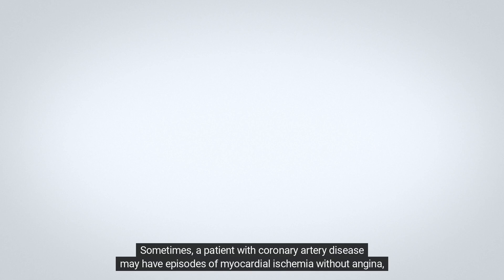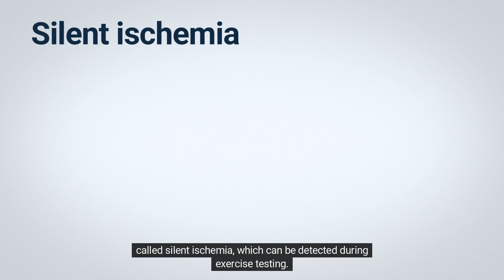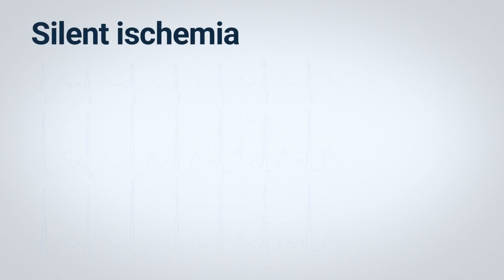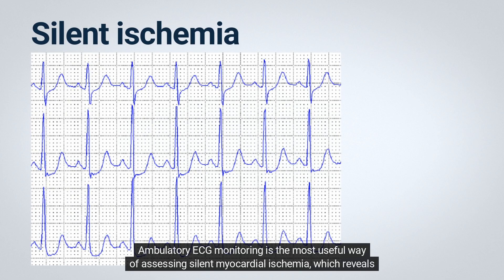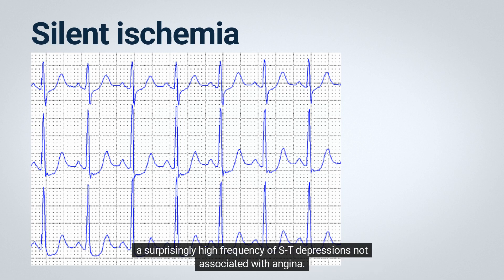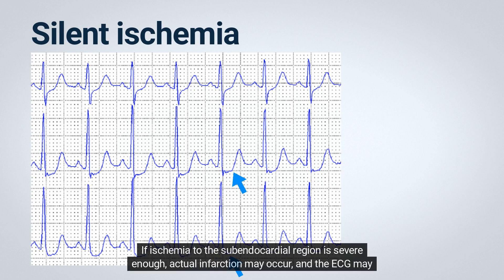Sometimes a patient with coronary artery disease may have episodes of myocardial ischemia without angina, called silent ischemia, which can be detected during exercise testing. Ambulatory ECG monitoring is the most useful way of assessing silent myocardial ischemia, which reveals a surprisingly high frequency of ST depressions not associated with angina.